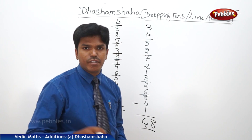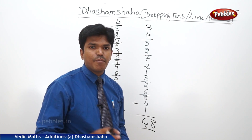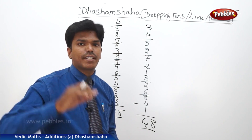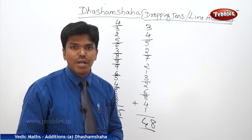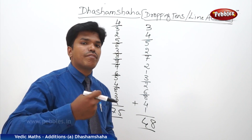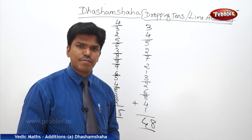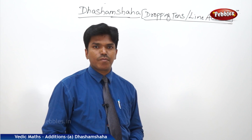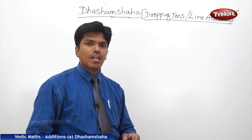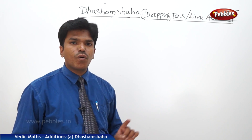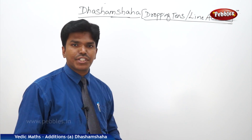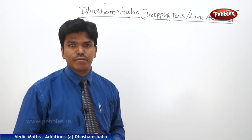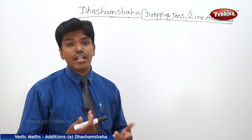Don't count slowly. At a time, you have to count 2 or 3 tens — that way you save time and can do it as fast as possible. Now, we have seen only one-line addition. If 2 or 3 lines come, then how? Let us take one example.